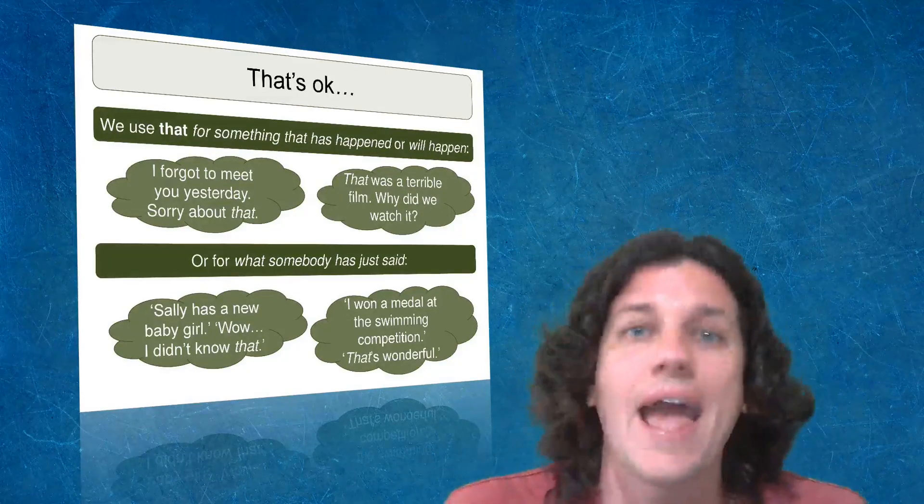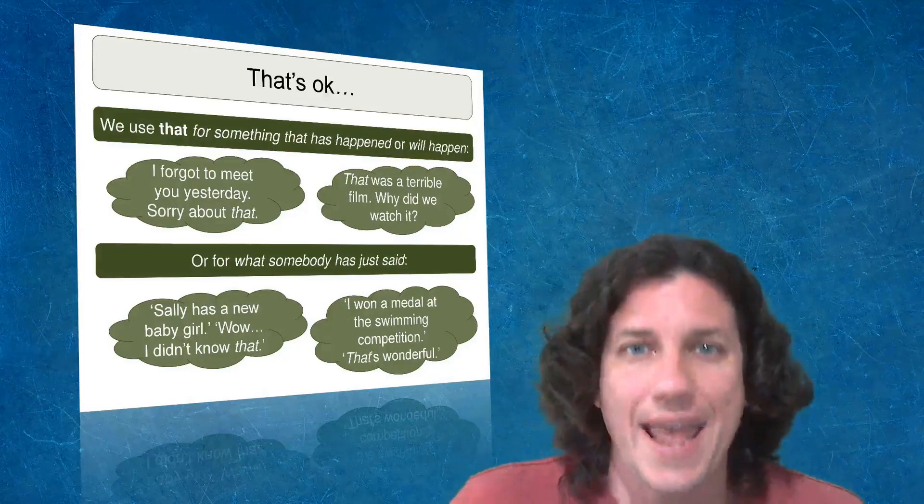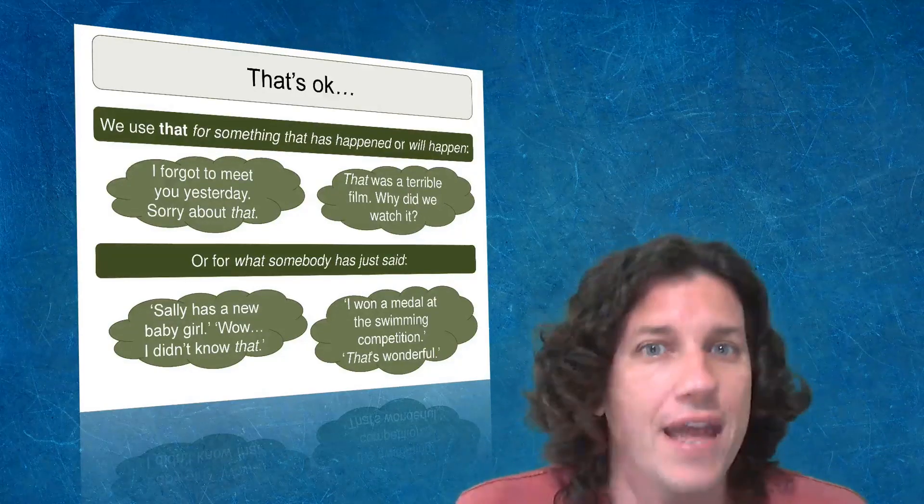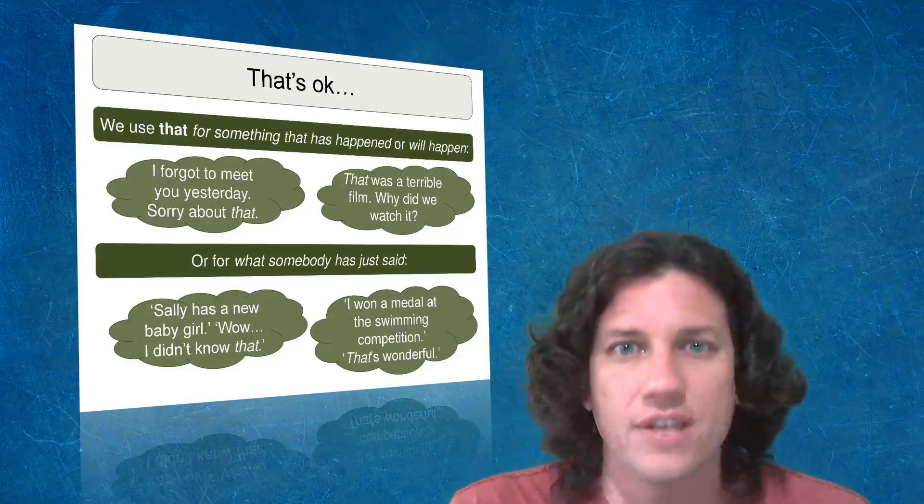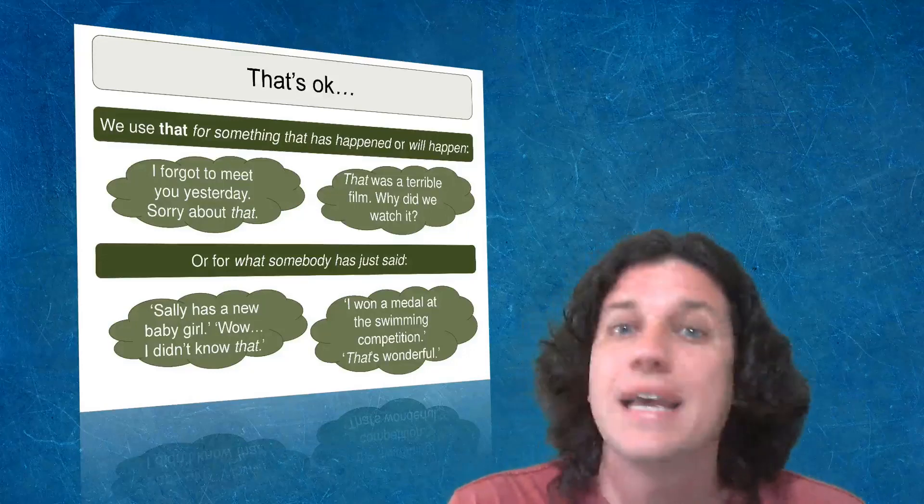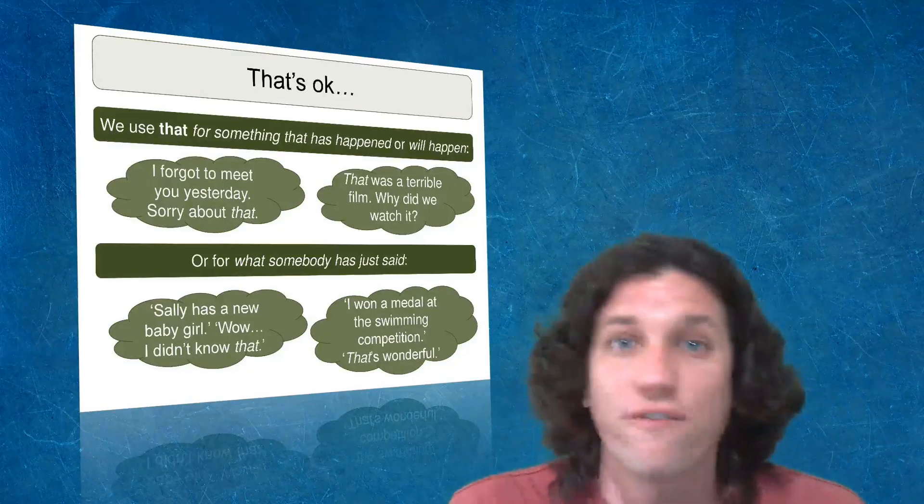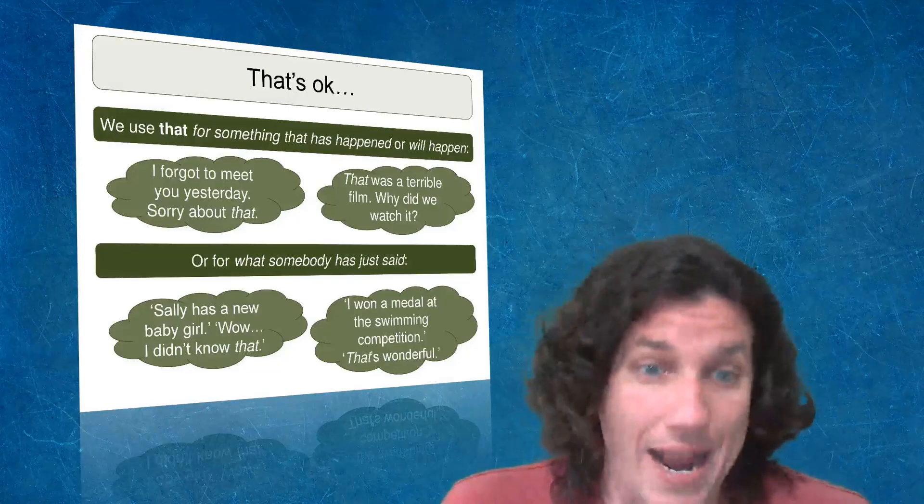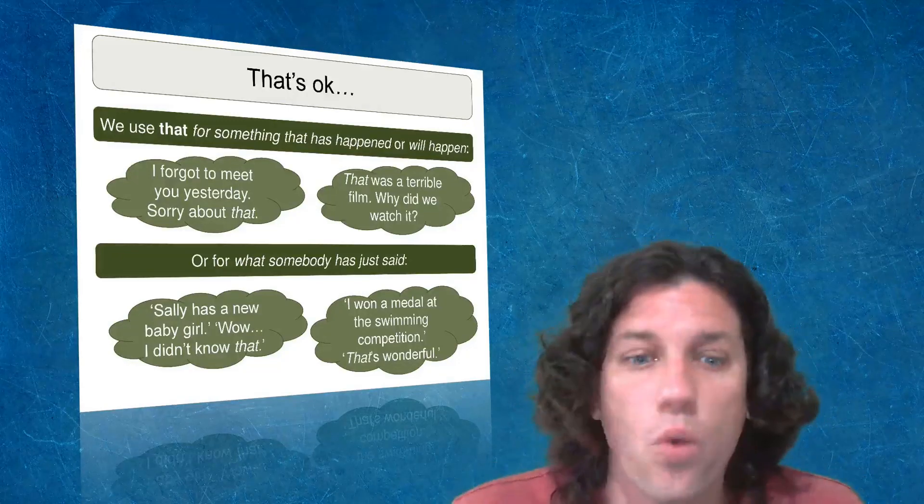We say things like this in English all the time. We do it without thinking about it. And if your students aren't equipped to handle these examples, then the teaching of this, that, these, and those without these key concepts isn't going to help them. So for what someone has just said, Sally has a baby girl. I didn't know that. That's wonderful.